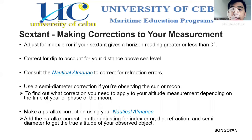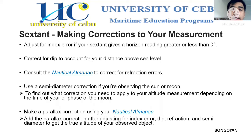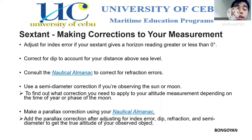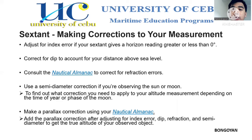Next, making corrections to your sextant measurements. First, adjust for index error if your sextant gives a horizon reading greater or less than zero degrees. Second, correct for dip to account for your distance above sea level. Next, consult the nautical almanac to correct refraction errors.